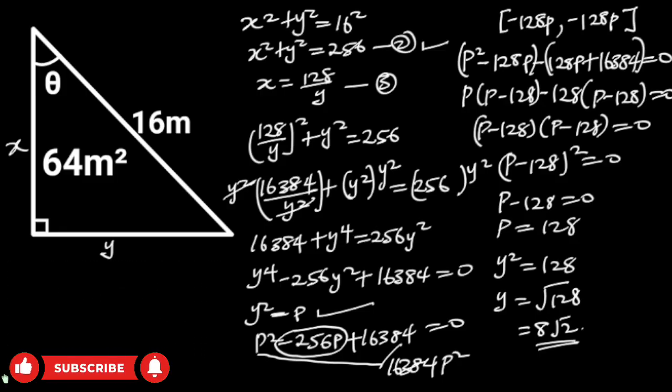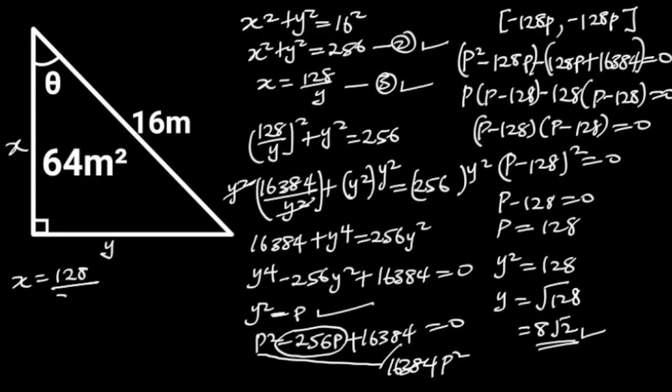Now we know the value of y, let's go ahead and find x. To do so, let's substitute y with 8 root 2 in equation 3. And this will give us x is equal to 128 over 8 root 2. 128 divided by 8 is 16.